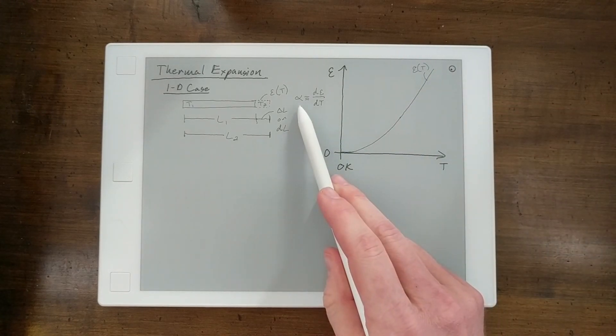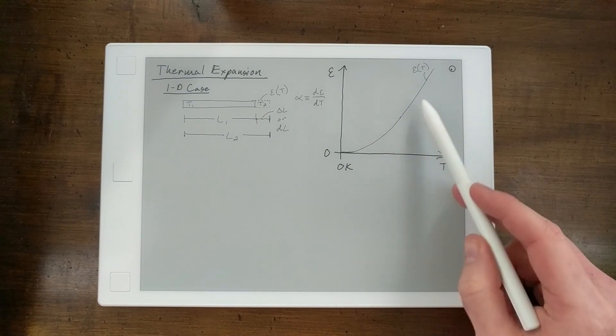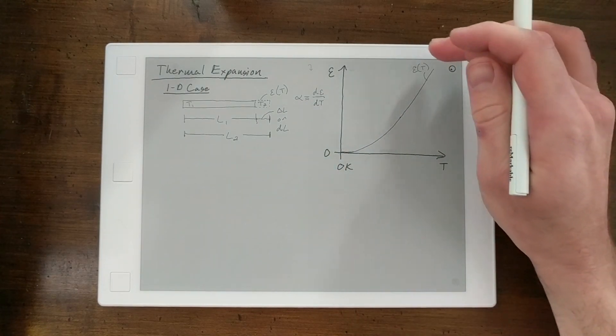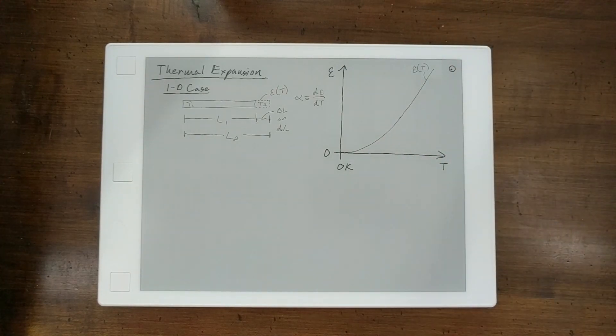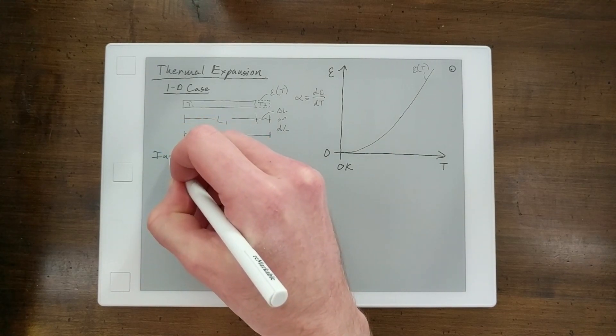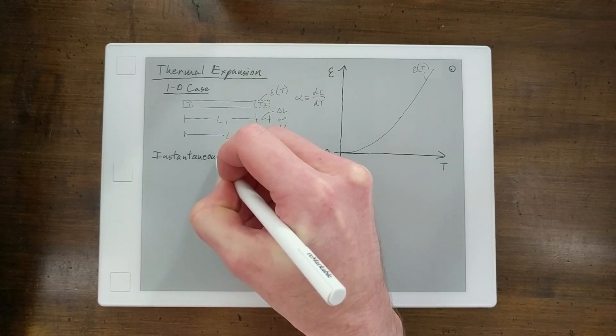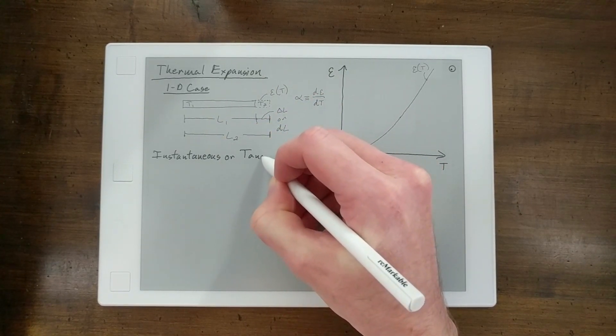And so this curve is the strain as a function of temperature. And when we think of thermal expansion coefficient, we're looking at the slope of this curve with temperature. And so that slope, as it changes with temperature, is what we call the instantaneous or tangent CTE.